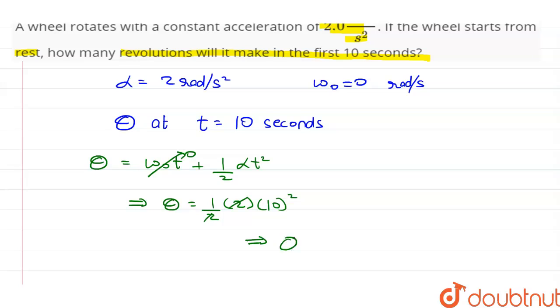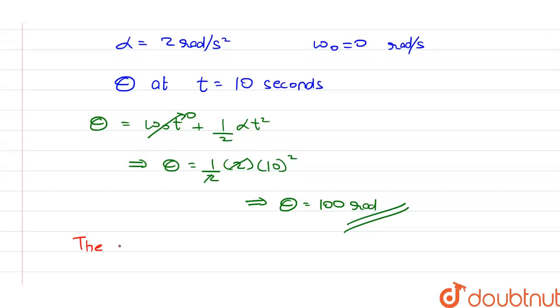This implies theta is equal to 100 radians. The number of revolutions is equal to theta divided by 2 pi.